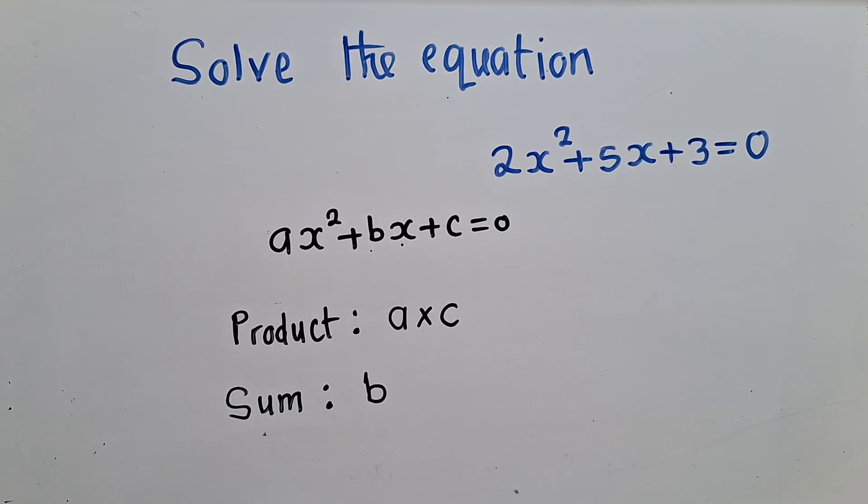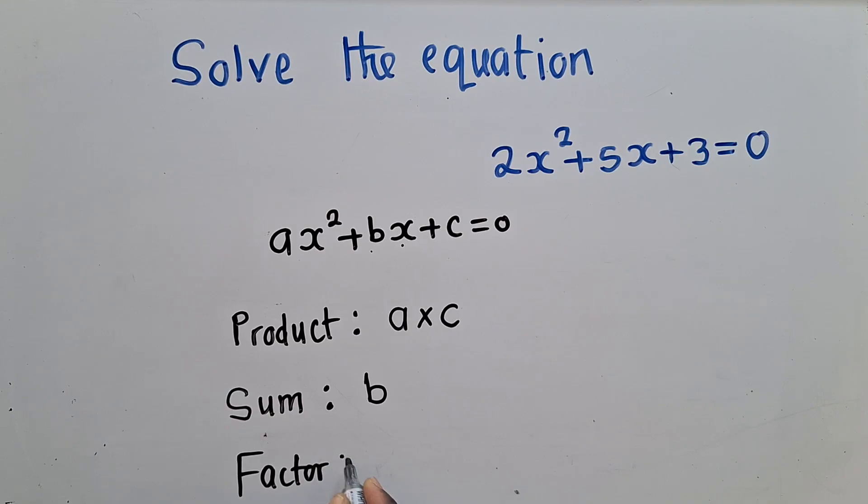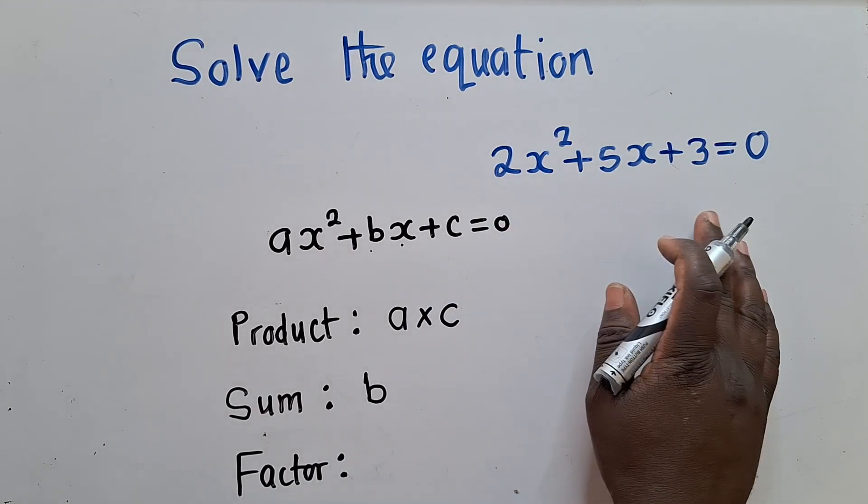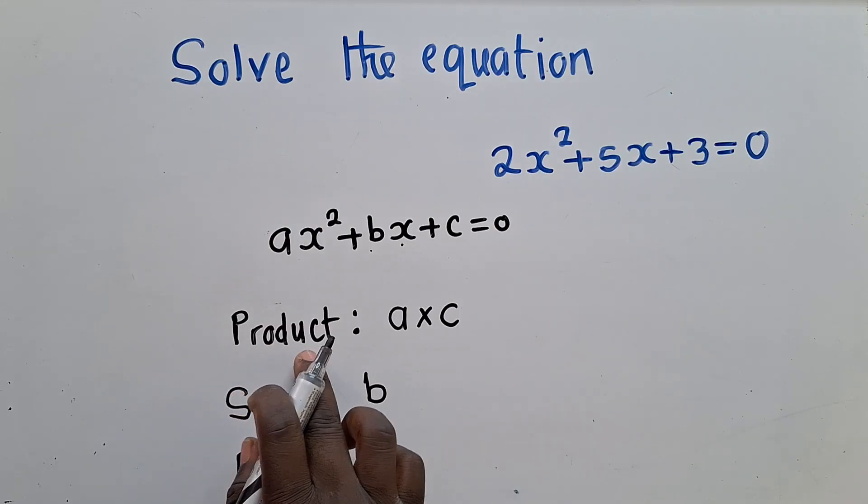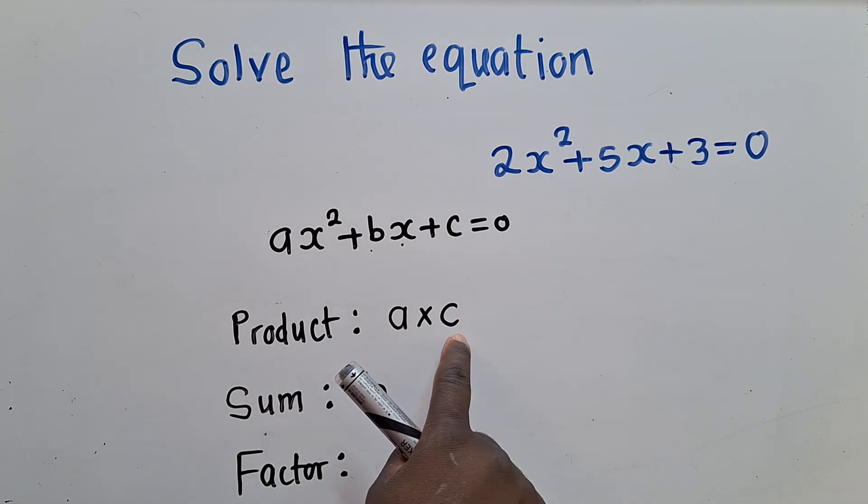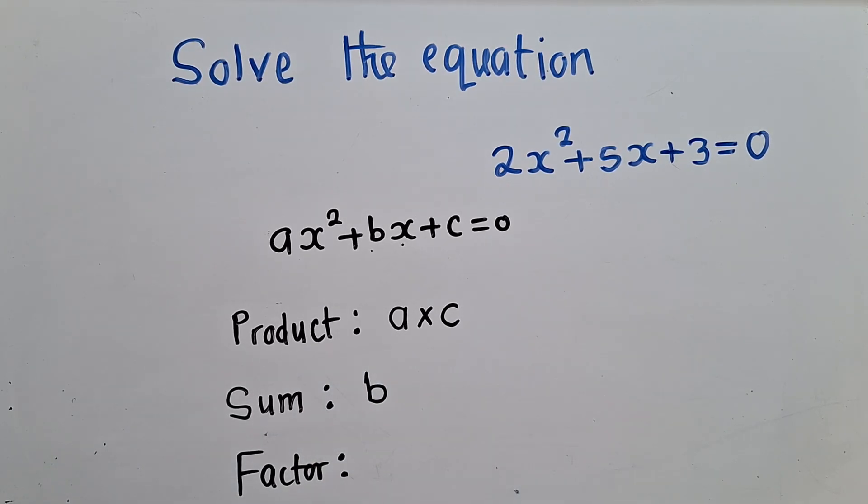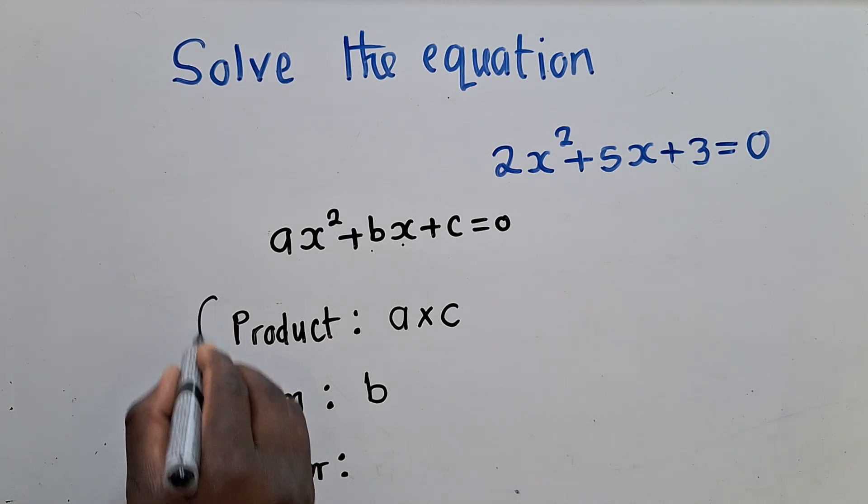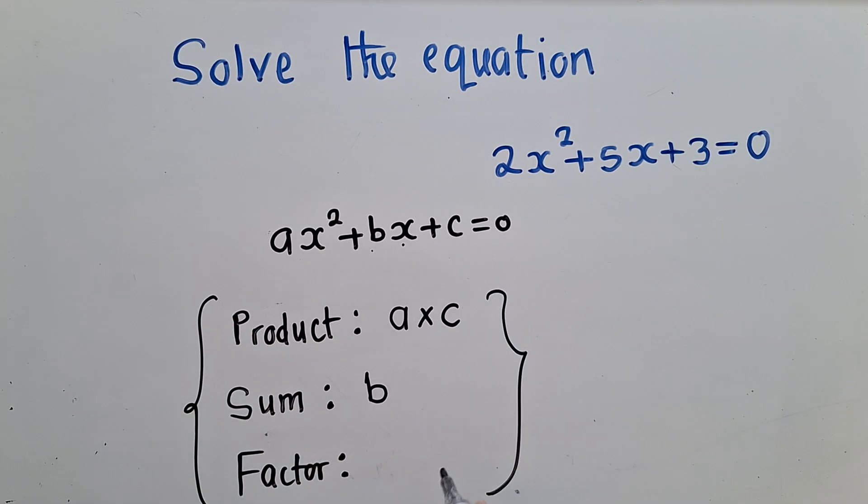So now, when you find this, you now get to identify what we call factors. So before start solving, or before start solving your quadratic equation, you first need to identify your product, you identify your sum and the factors. So factors, these are two numbers, such that when you multiply them, they give you the product. And when you add them, they give you the sum. I will explain more on factors.